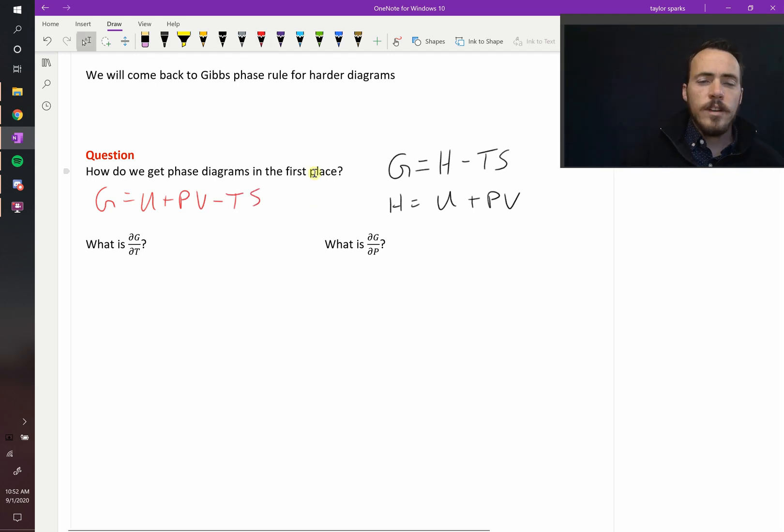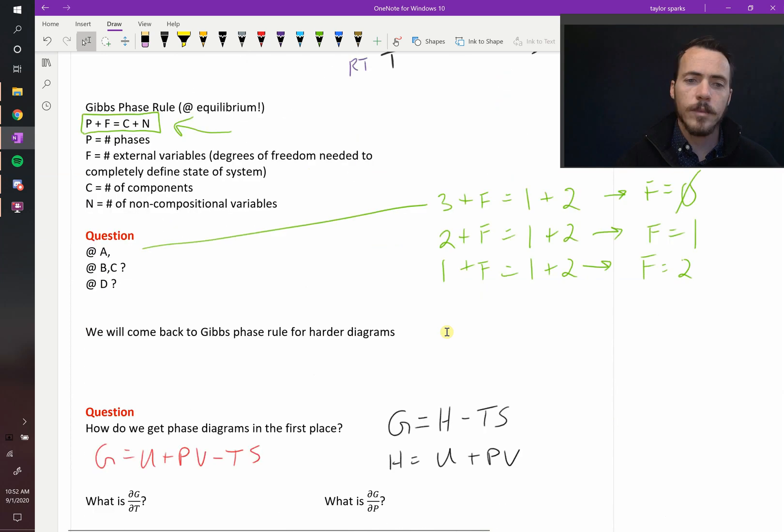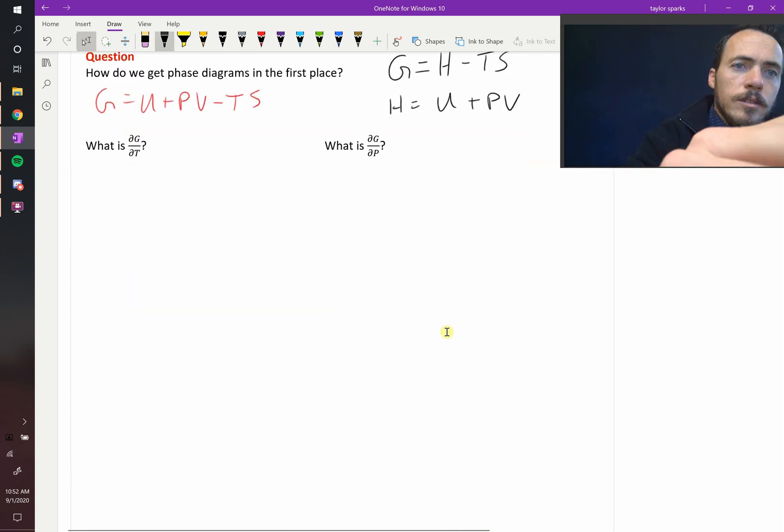Now, if you look at these phase diagrams, there are things that are changing. As you go up and down in pressure, or as you go up and down in temperature, we can get different phases occurring. So if we were going to plot these things, imagine that we could plot these like this.